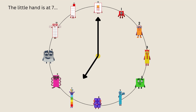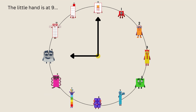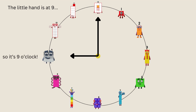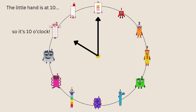The little hand is at 7, so it's 7 o'clock. The little hand is at 8, so it's 8 o'clock. The little hand is at 9, so it's 9 o'clock. The little hand is at 10, so it's 10 o'clock.